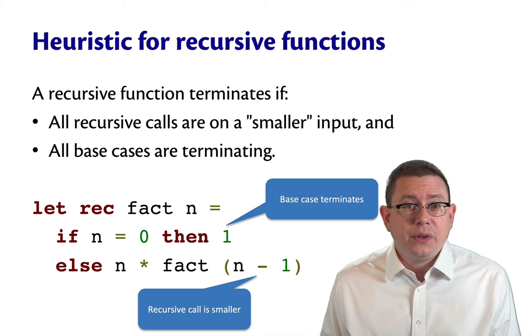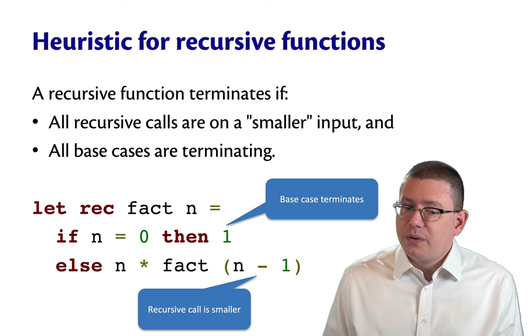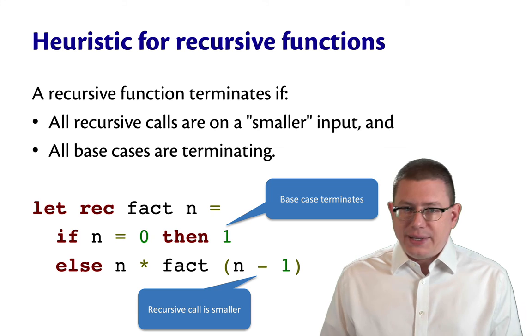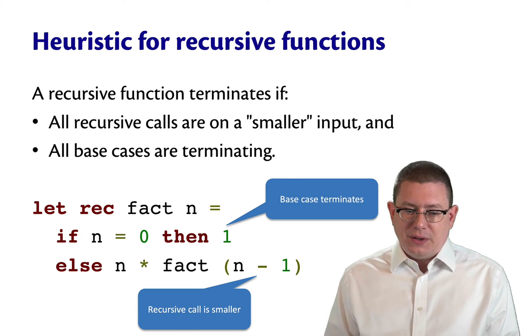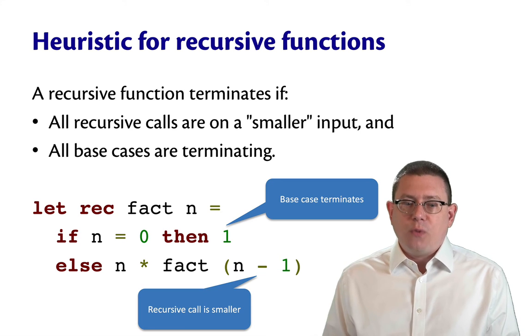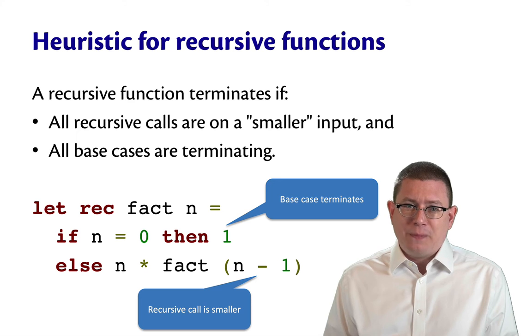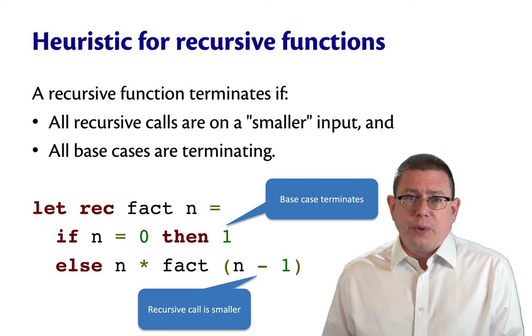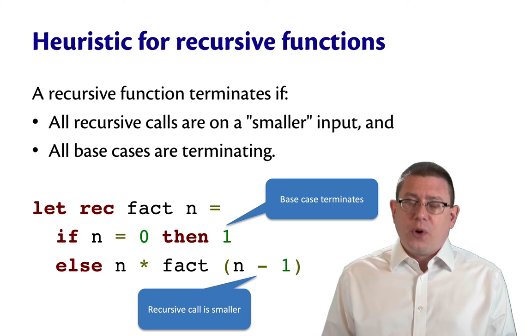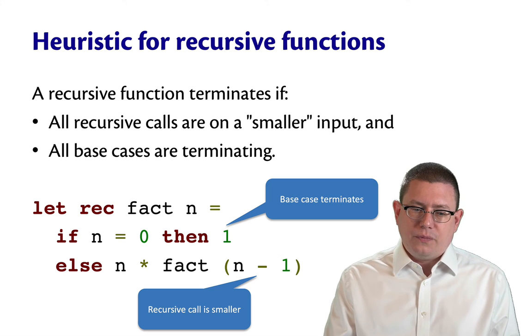But on integers, that's not true. Suppose you called fact here on negative 1. Well, then you know what's going to happen. You're going to keep calling fact on negative 1, then negative 2, and so forth, because nothing in here accounts for the possibility that n was negative. In fact, that would be a precondition if we were writing this down as part of a real program that we coded.